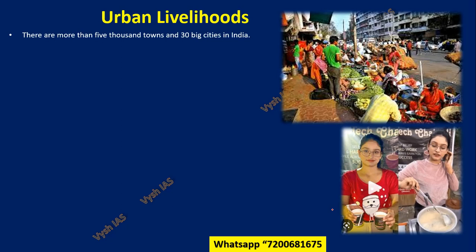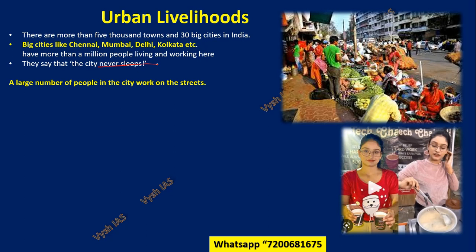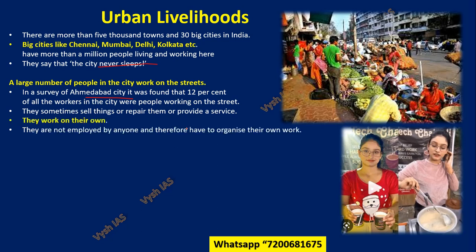In India there are thousands of towns and at least 30 big cities like Chennai, Mumbai, Delhi, Kolkata, Noida, Pune — cities that are big in population and economy where people go to settle for jobs or other purposes. A large number of people in cities work on the street. In an Ahmedabad survey in Gujarat, it was found that 12% of all workers in the city were working on the street. They may not be native to that place; they sell things, repair them, or provide services, organizing their own work since they are not employed by anyone.